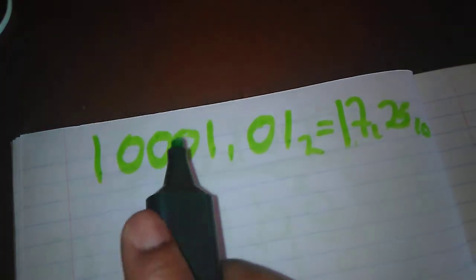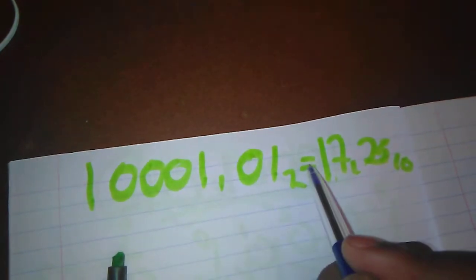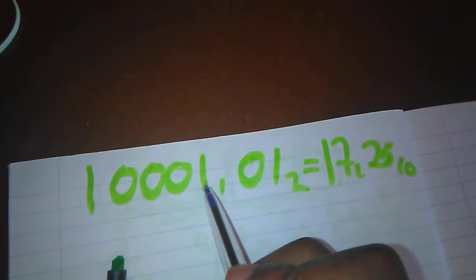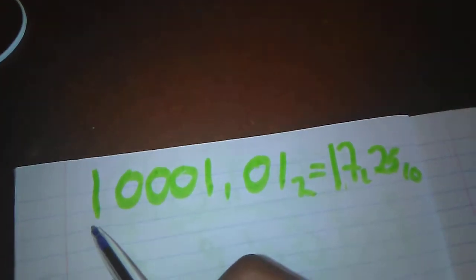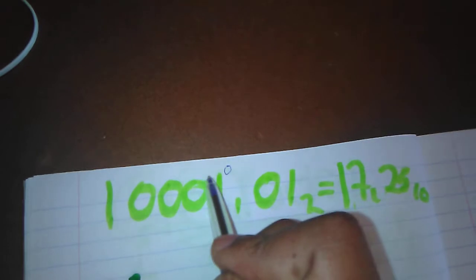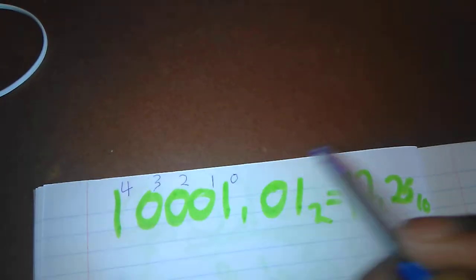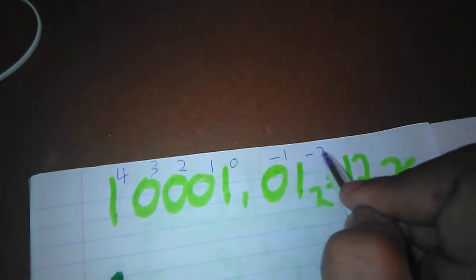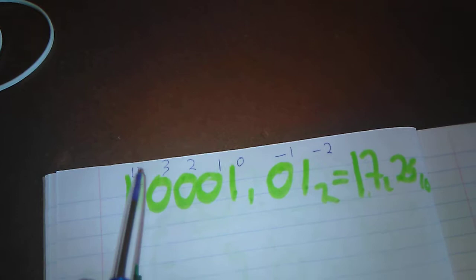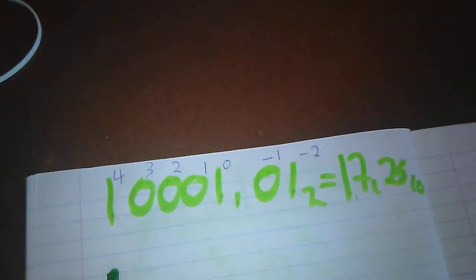The first thing to do when approaching this kind of question is to start by assigning your bits and exponents. From the comma going to the right side, you give them negative exponents, and from the left-hand side going to the last bit, you give them positive exponents. From the left, the first bit gets exponent zero, the next is one, then two, three, four. From the comma, going right, you give minus one, minus two. If you had more bits, the exponents continue as five, six, seven, eight, or minus three, minus four and so on.